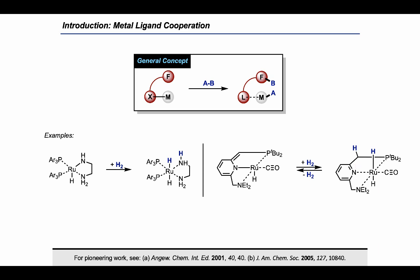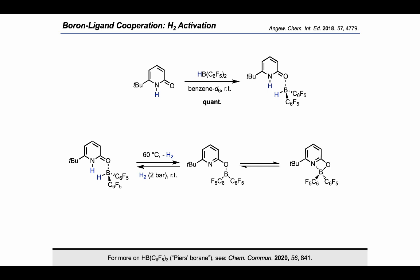In a metallomimetic approach, we wanted to transfer this reactivity mode to frustrated Lewis pairs. Based on an initial computational study, we synthesized 6-tertbutylpyridone. Addition of 6-tertbutylpyridone to Piers borane, a Lewis-acidic borane with two perfluorophenyl substituents, yields this pyridone-borane complex. Upon moderate heating to 60 degrees, the pyridone-borane complex liberates dihydrogen and the pyridonate borane is formed. The pyridonate borane can be regarded as an intramolecular frustrated Lewis pair. Indeed, it splits dihydrogen under mild conditions.